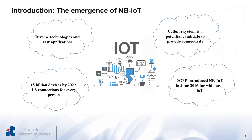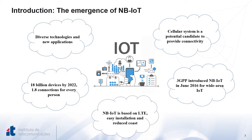Therefore, the 3GPP introduced in 2016 a new cellular technology standard called Narrowband Internet of Things, or in short, NB-IoT, to provide services through wide-area cellular networks. NB-IoT is based on LTE and thus operates in the same licensed band. It reuses the LTE infrastructure, which allows for easy network installation and reduced cost.